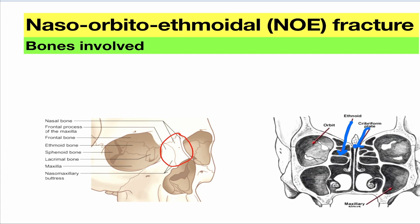And this is the ethmoid bone — so it's shown as ethmoid bone. This is the cribriform plate. Fracture of this causes CSF rhinorrhea. So remember that NOE fracture can cause CSF rhinorrhea because this cribriform plate will fracture. So in LeFort III also, you can see this entire area getting fractured. We have gone into detail of it in one of our lectures.